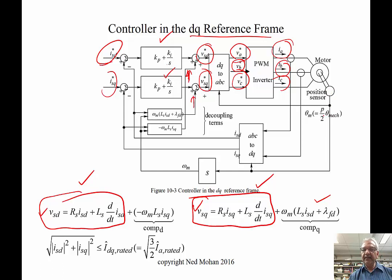Multiplying by P/2, we get theta M, which gets fed back into this block. Also, theta M is differentiated—dθ/dt is speed—we get ω_M, which is needed in these compensation terms.